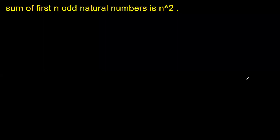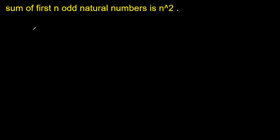We will see what is the sum of first n odd natural numbers. Odd natural numbers are the numbers which are not divisible by two. Let's take the first one odd natural number, that is 1 only, and this can be written as 1 squared.